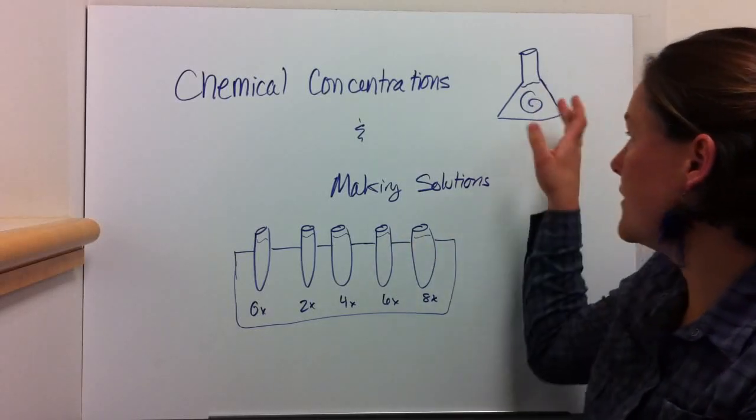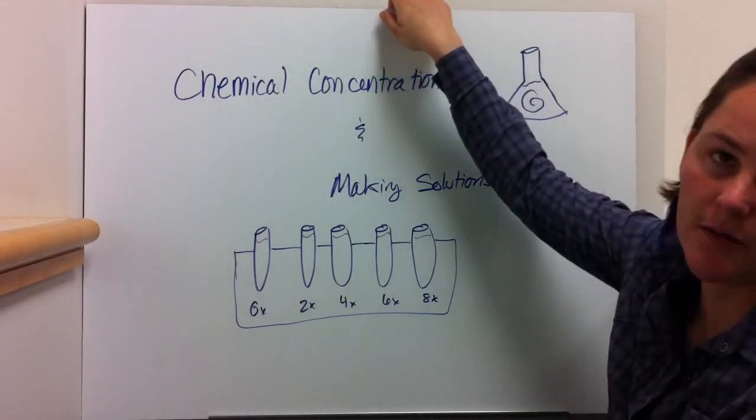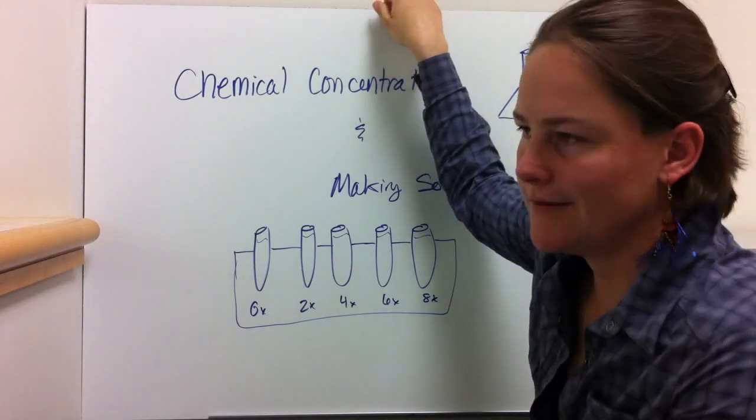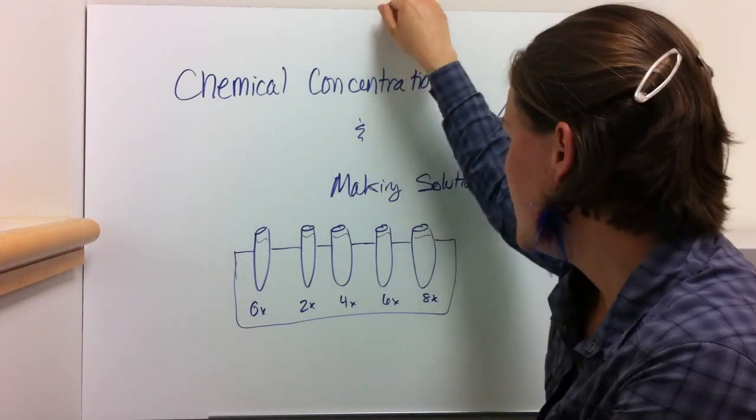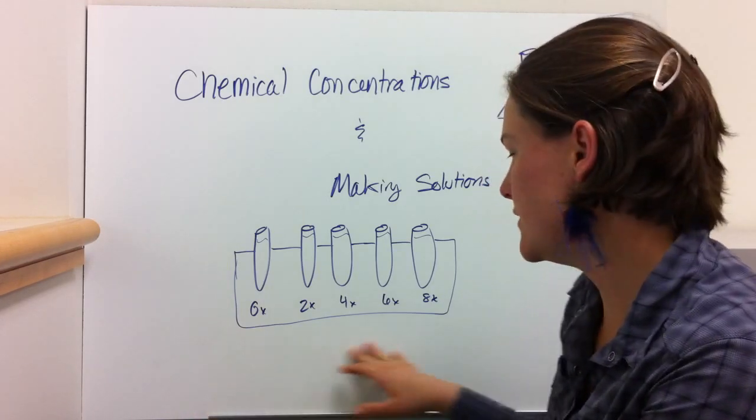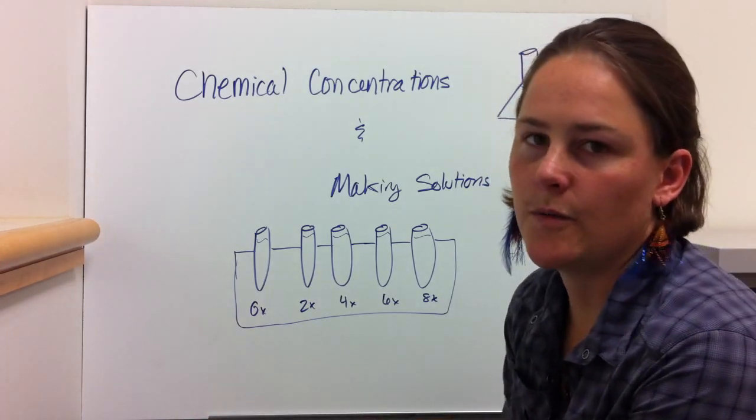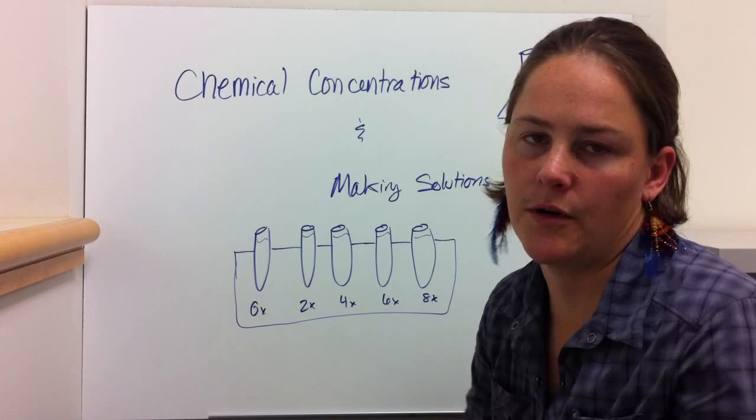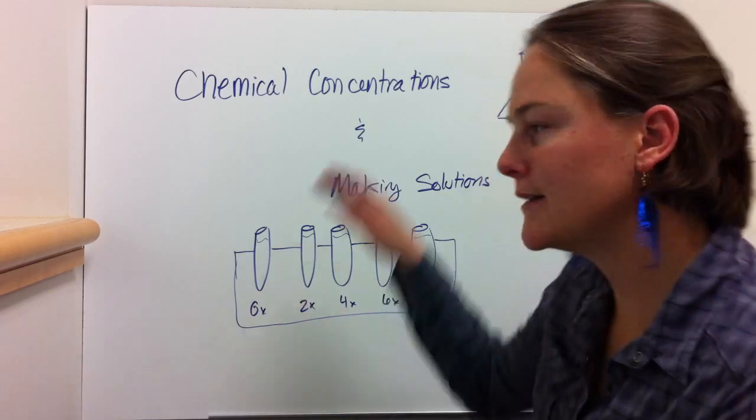Concentrations and making solutions. Chemical concentrations are all about how much of what is in a solution or in a solid. Making solutions is where you might be doing a serial dilution like what you see here, or you might just be making a solution of 0.1 molar hydrochloric acid.